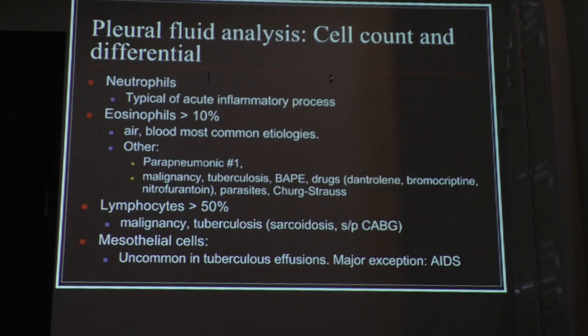If you have a predominant lymphocytic effusion, you think about malignancy, TB, sarcoidosis, or after patients get a coronary artery bypass — what we call post-cardiac injury syndrome.